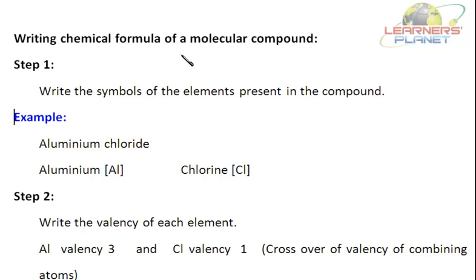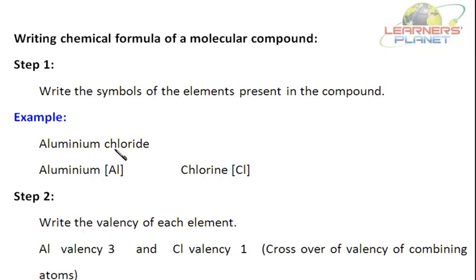Writing chemical formula of a molecular compound. There are following steps to be followed. The first step is to write the symbols of the elements present in the compound. For example, aluminium chloride. The symbol of aluminium is Al, whereas the symbol of chlorine is Cl.